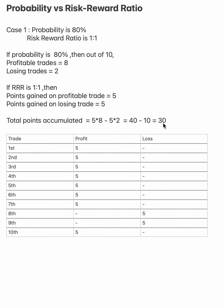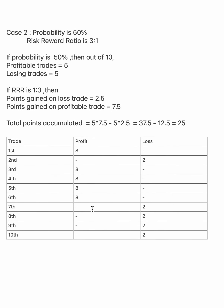So here we have a total of 30 points. Now we will decrease the probability to 50 percent and increase the risk reward to 1 is to 3 in the second case. When probability is 50 percent, that means we have an equal number of profitable and losing trades, and the reward ratio is 3 is to 1.